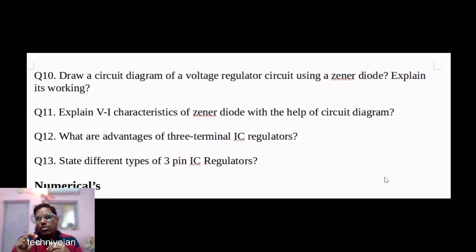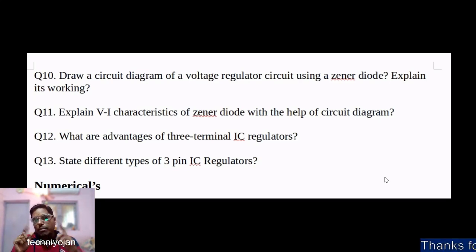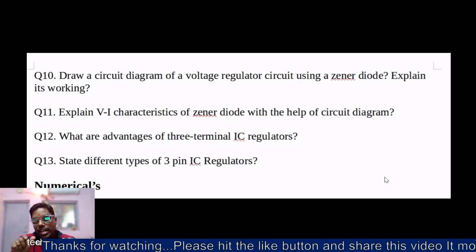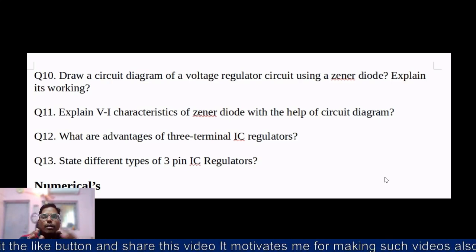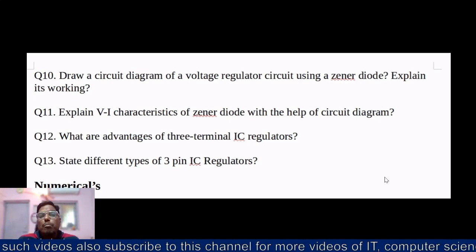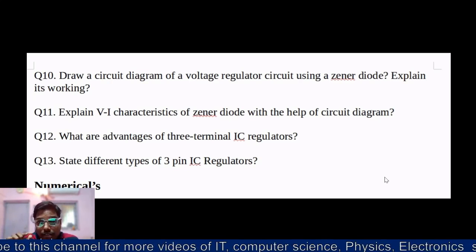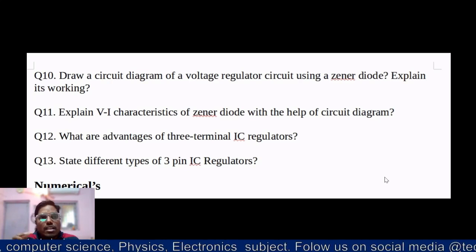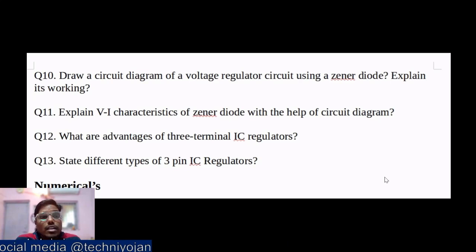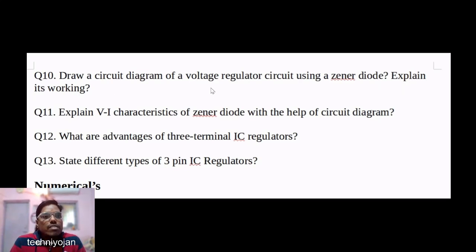Draw the circuit diagram of a voltage regulator circuit using a Zener diode. Keep the Zener diode symbol in mind: a straight line, then a triangle, then a straight line followed by tilted marks. That tilt is what distinguishes it from a normal diode. If you draw the wrong diode symbol, the whole concept goes wrong and you lose marks.